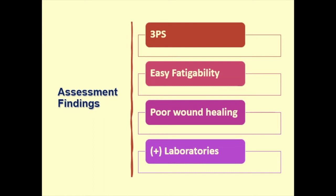For the laboratories, your patient would have an increase of fasting blood sugar and an increase of RBS. If your patient is on poor medication control, your patient would have an increase of HbA1c. Your HbA1c is used for medication compliance as it can detect blood sugar control for the past two to three months. If the patient is unable to reach the HbA1c percentage set as a target by the physician, there needs to be a modification of therapy. The usual target for a diabetic patient is to maintain an HbA1c of six to seven percent.